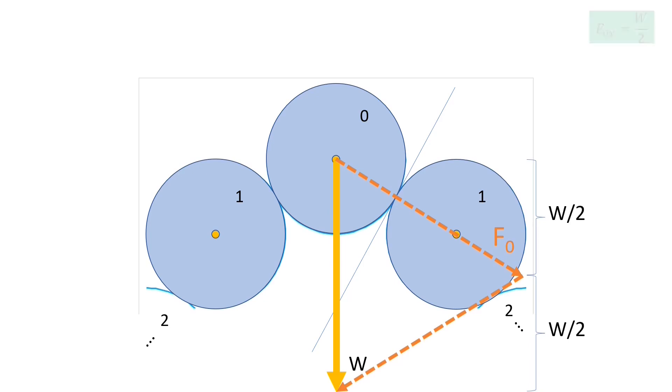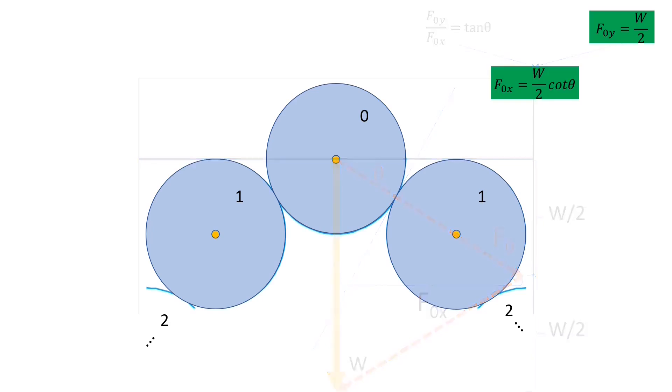Notice that the vertical y component of f0 is half of w by the symmetry in the tip-to-tail vector diagram. And so we can write this equation. But then, because of angle theta, the tangent of theta is the y component of f0 divided by its x component. And it follows that the x component of f0 is half w times cotangent theta. And we can stow away these results.